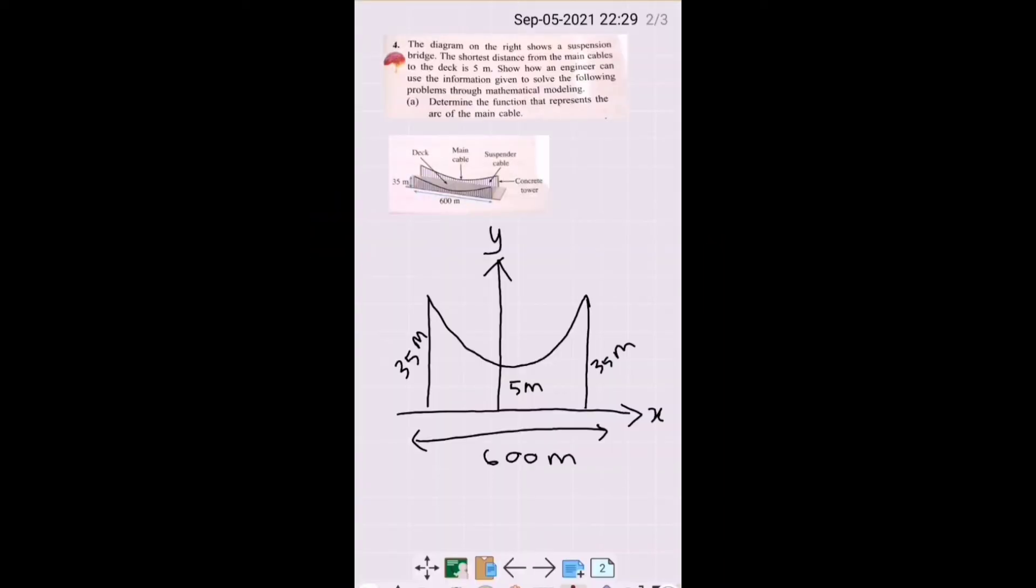The diagram shows a suspension bridge. The shortest distance from the main cables to the deck is 5 meters. Show how an engineer can use the information given to solve the following problems through mathematical modeling. Question A: determine the function that represents the arc of the main cable.